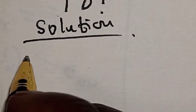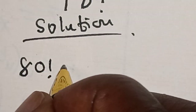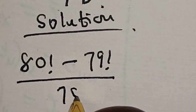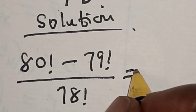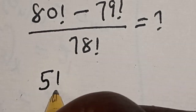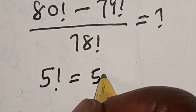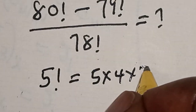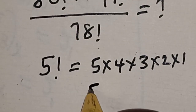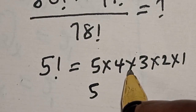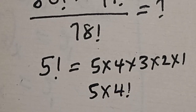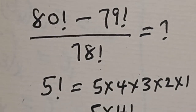We have the given question: 80 factorial minus 79 factorial divided by 78 factorial is equal to what. Now remember that if you have 5 factorial, this is equal to 5 multiplied by 4 multiplied by 3 multiplied by 2 multiplied by 1. We can split it — 4 multiplied by 3 multiplied by 2 multiplied by 1 is the same as 4 factorial. So now let's split this.